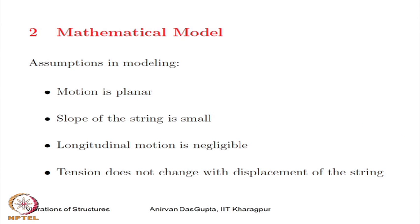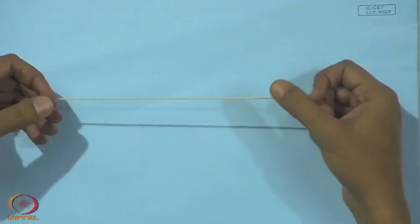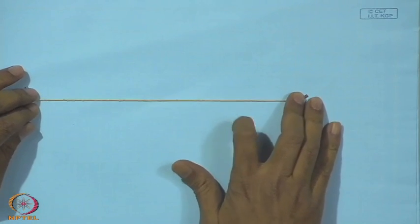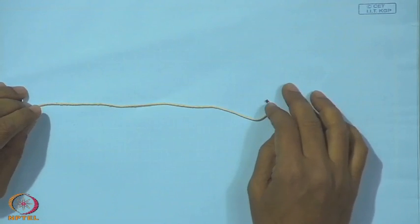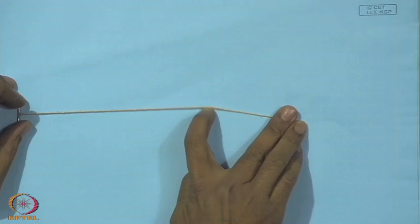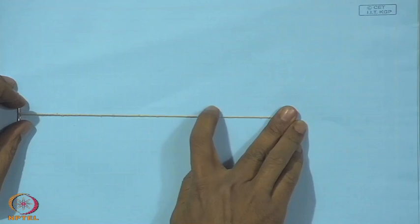We start with a mathematical model. In order to model strings, we will make some assumptions. The first assumption says that the motion of the string is planar — we assume that the string vibrates only in this plane. Then, the slope of the string is small — when the string deforms, the slope at any point of time is small.